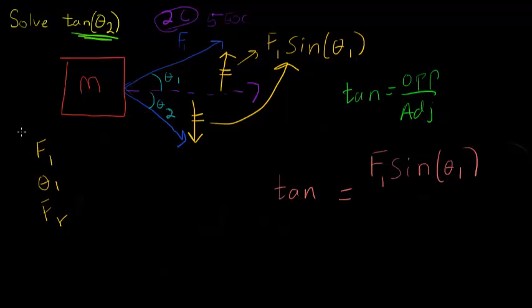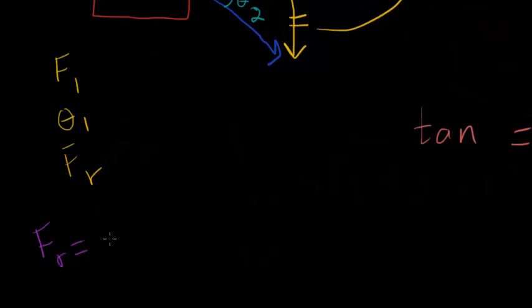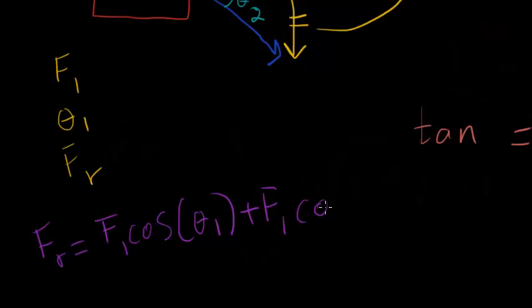And from part A, which I'm assuming you probably already did if you're jumping on this bandwagon already, we know FR is going to be F1 cos(theta1) plus F2 cos(theta2).